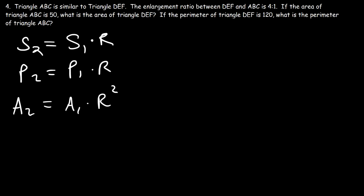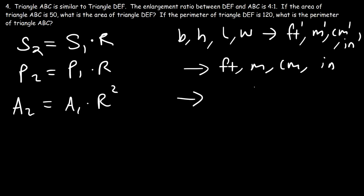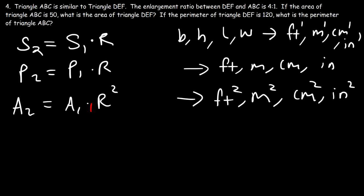Think about the units: side lengths and perimeters are measured in feet, meters, or centimeters — raised to the first power. But area is measured in square units — square feet, square meters, square centimeters. So to get the correct area of the second figure, you multiply by the enlargement ratio squared.